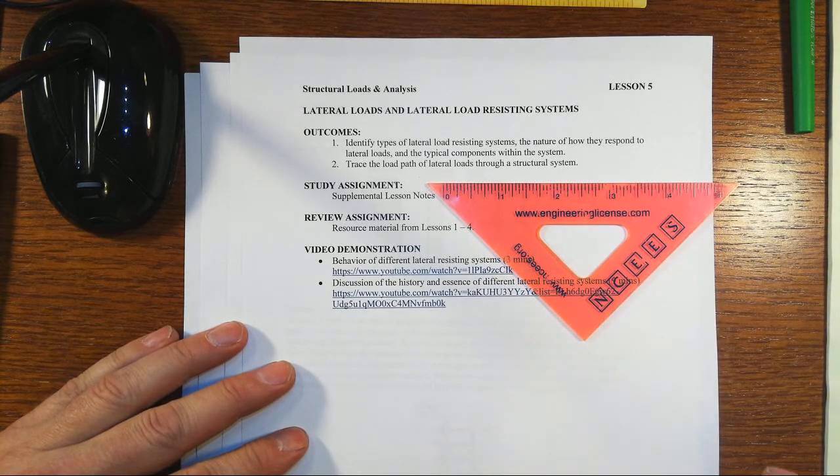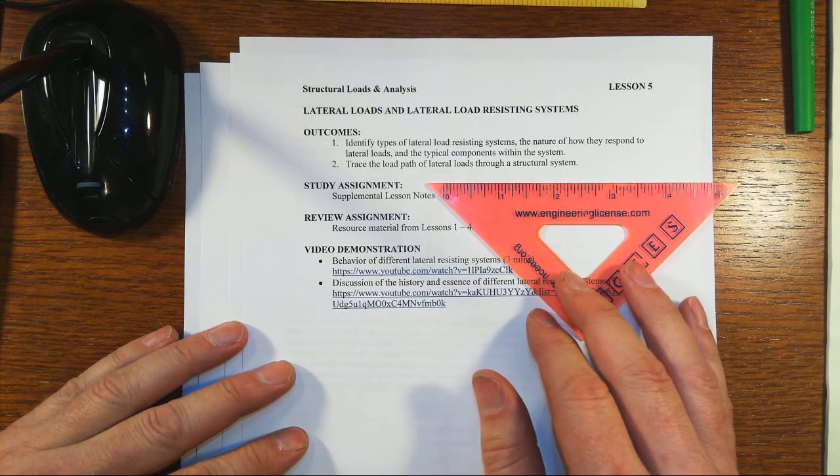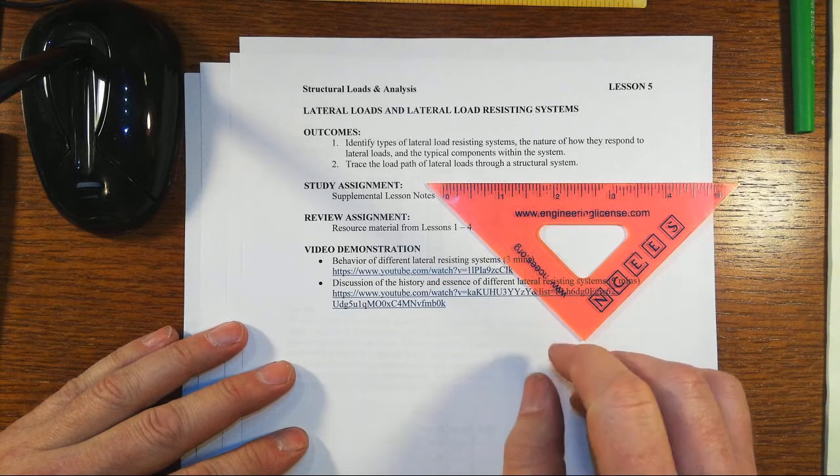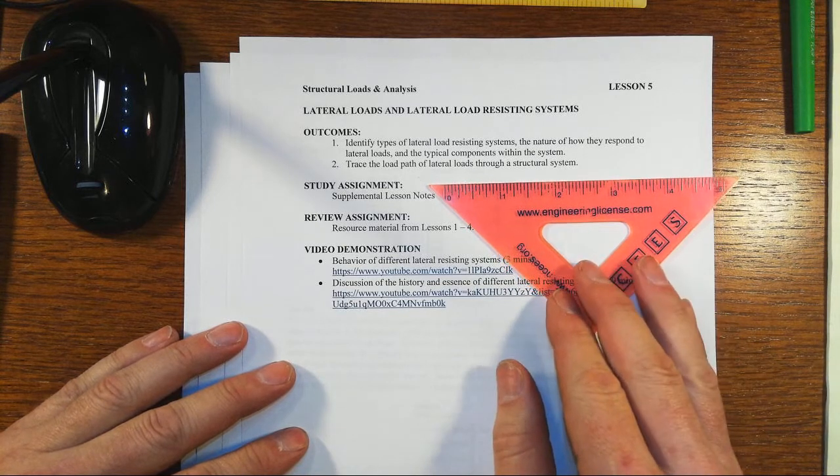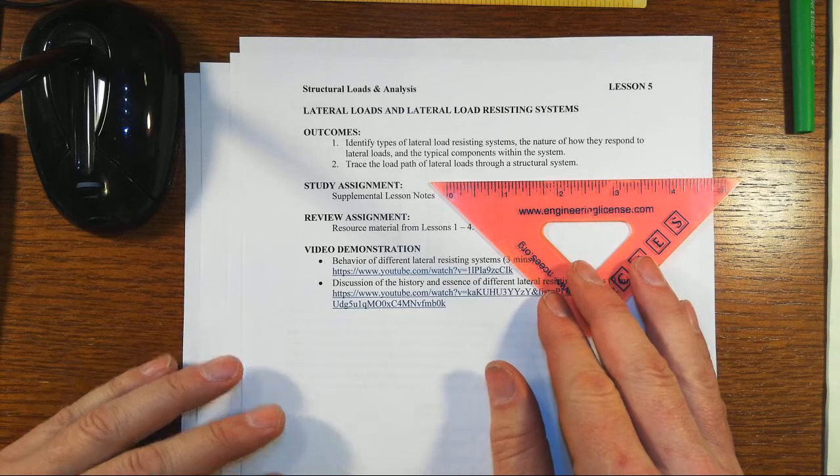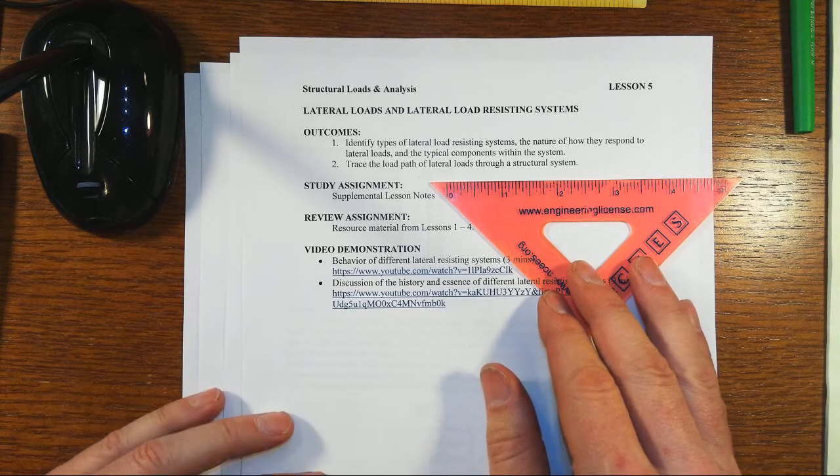That's going to help us trace the load path as we go through it, and it will be a lot more complicated in some ways than gravity loads, but in other ways it's actually simpler because the components are fewer in number.